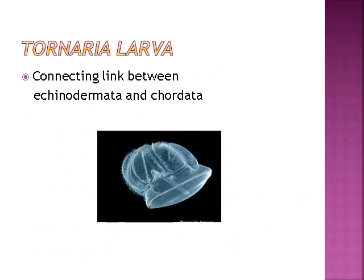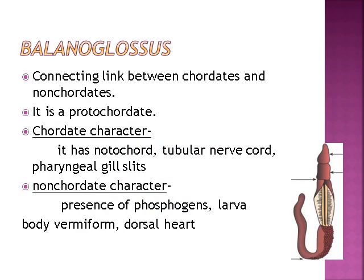Tornaria larva is the connecting link between Echinodermata and Chordata. Balanoglossus is the connecting link between non-chordates and chordates — it is a proto-chordate. Chordate characters: it has notochord, tubular nerve cord, and pharyngeal gill slits. Non-chordate characters: presence of phosphagens, vermiform larva body and dorsal heart.